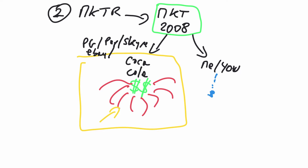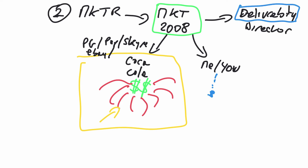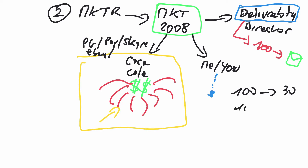My role when I moved to marketing was Deliverability Director. Deliverability basically means: if you send 100 emails, how many are actually being delivered? The higher the number, the more money you make. If you send 100 emails but only 30 make it, versus me sending 100 and getting 99 delivered, I have more chances of making money — because if none of your emails make it to the inbox, you make zero money.